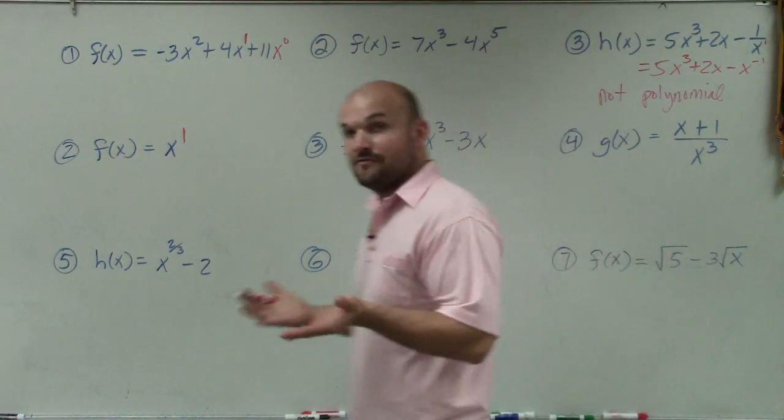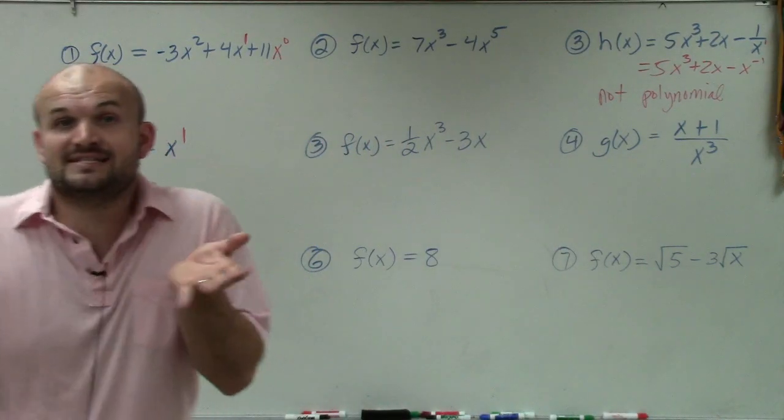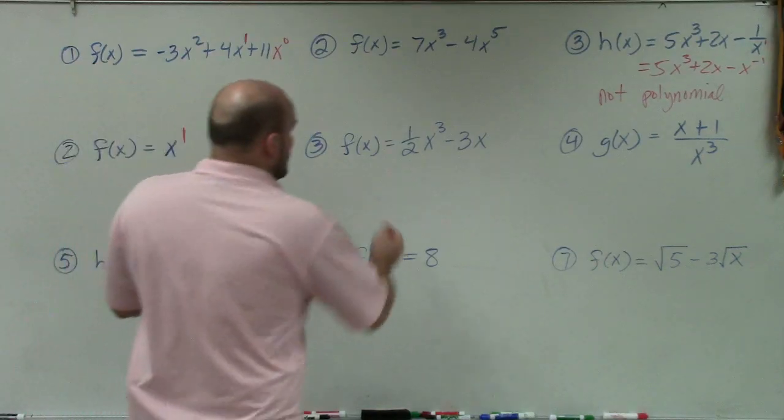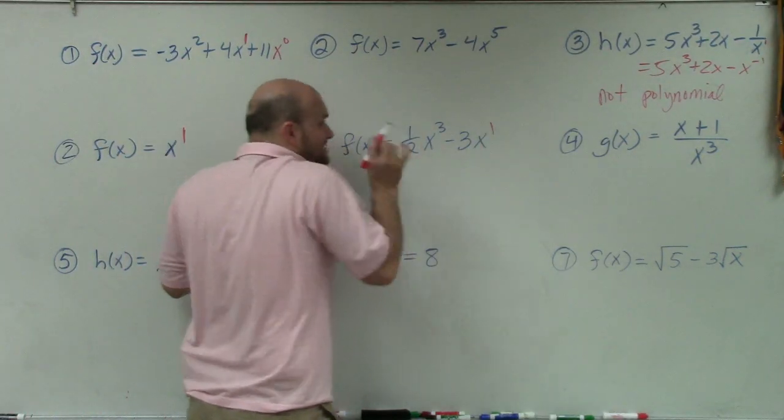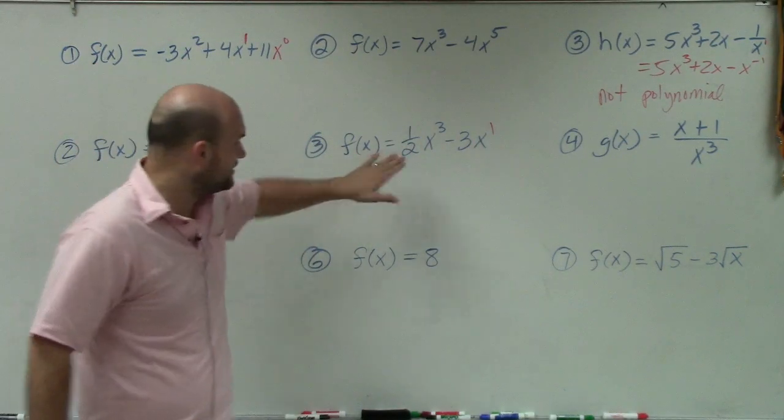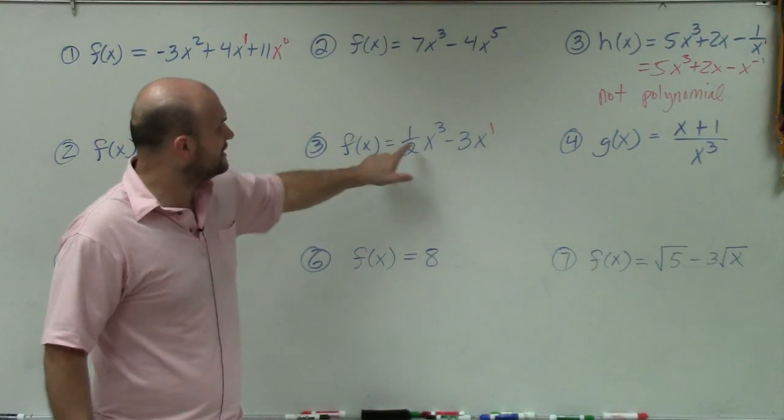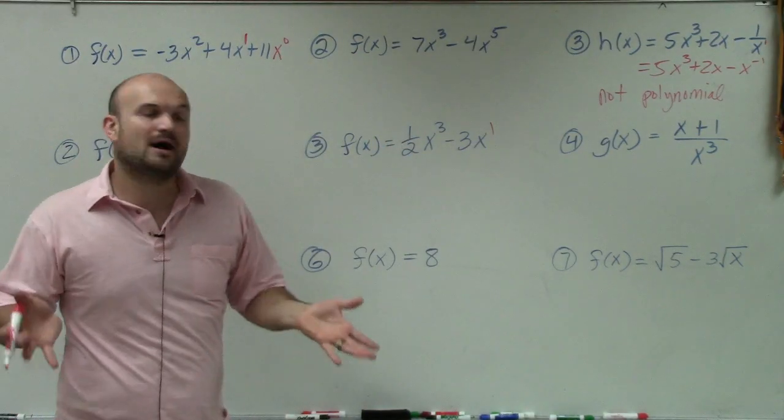Over here, yes, we have a fraction, but that fraction is the coefficient. It's not the power. We look at the powers, that's all we're concerned about, we don't care about what's in front. The power in here is 3 and 1, so this is a polynomial function.